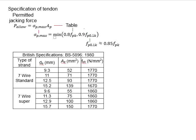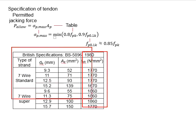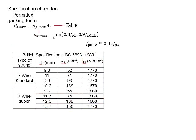In the case that fp0.1k is not given, it is considered about 0.85 fpk. The fpk can be obtained from this table also. And substitute the fpk and fp0.1k into the equations, you are able to define the permissible jacking force for the tendon.